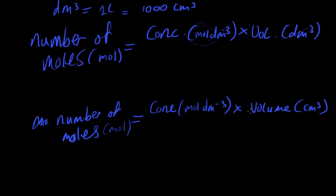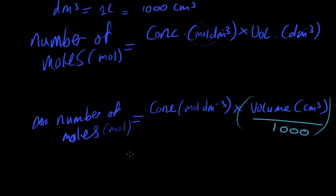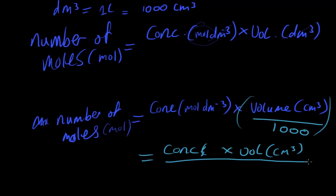As covered in the video on unit conversions, when converting cm³ to dm³ you divide the value by 1000 and change the units from cm³ to dm³. So the formula becomes: number of moles equals concentration multiplied by volume in cm³, divided by 1000.